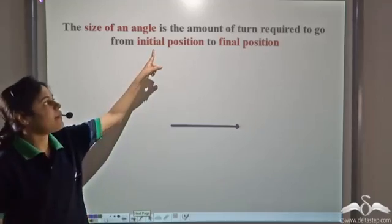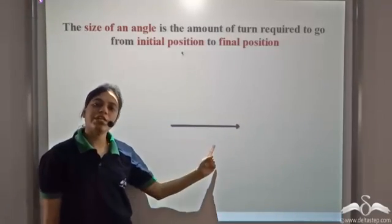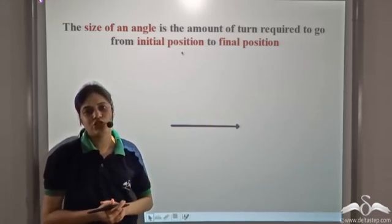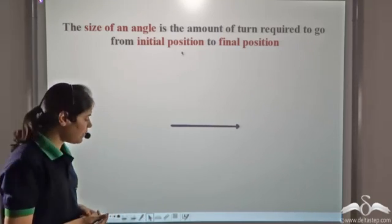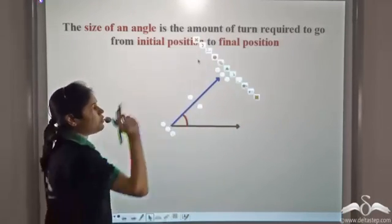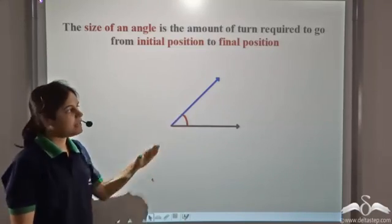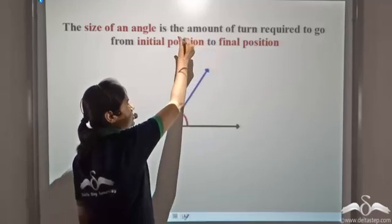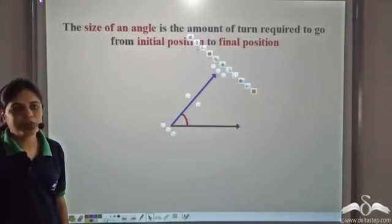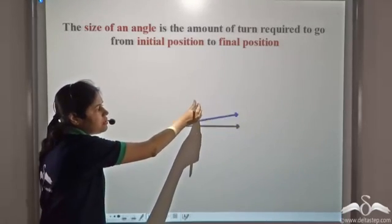The size of an angle is the amount of turn required to go from the initial position to the final position. So consider this to be the initial position — the amount of turn required to reach the final position is called the size of the angle. More the turn, greater will be the angle. If I increase the turn, the size of the angle increases; if I decrease the turn, the size decreases.